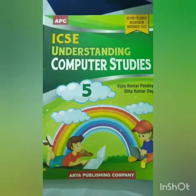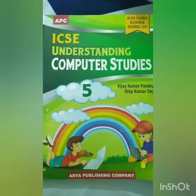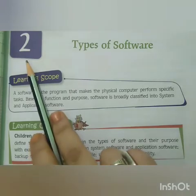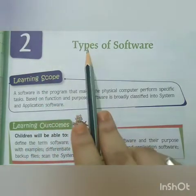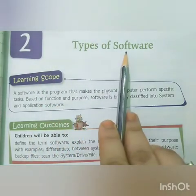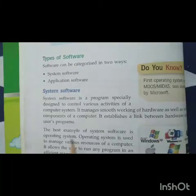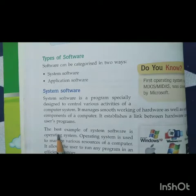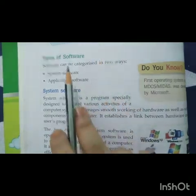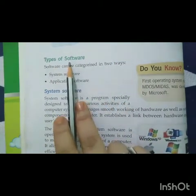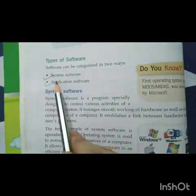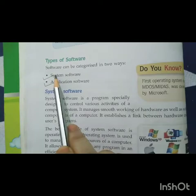This is your book: ICAC Understanding Computer Studies. In our previous video we started chapter number two: Types of Software. Before continuing with the rest of the chapter, let us take a quick recap of what we have studied till now. We discussed about the types of software — there are two types: system software and application software. We studied about system software, and in this video we'll continue with application software.